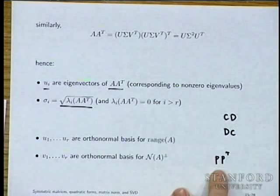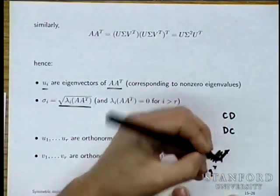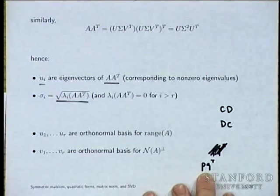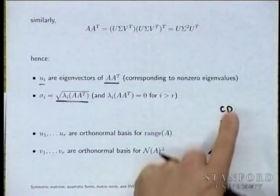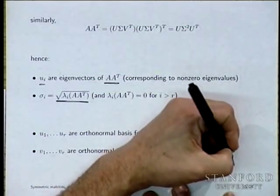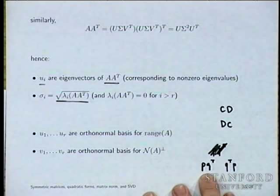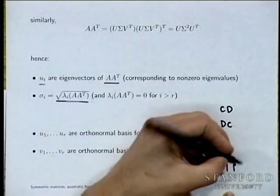This is super useful. For example: PQ^T is a rank-one matrix, and you can ask what its eigenvalues are. By this theorem, they are the same as the non-zero eigenvalues of Q^T P, which is a 1×1 matrix. So the eigenvalues of PQ^T are Q^T P and N minus one zeros.